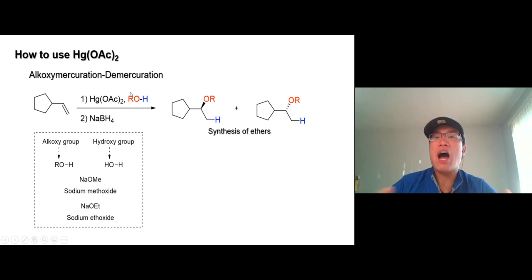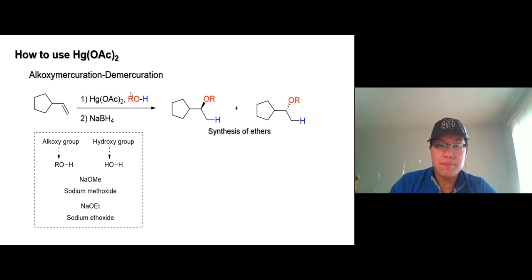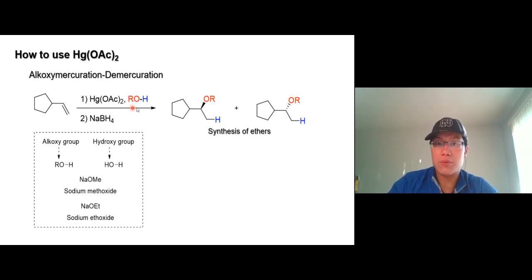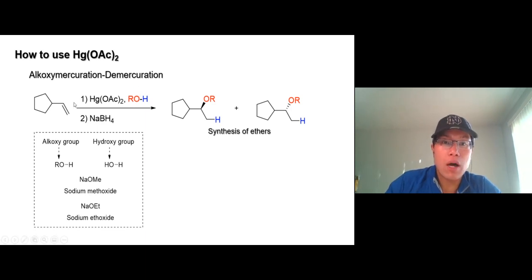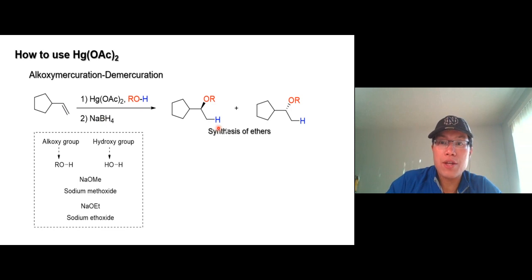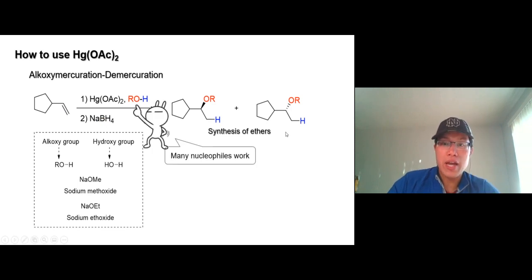We call it alkoxy mercuration-demercuration. You don't have to memorize the name, but when I say alkoxy mercuration or oxymercuration, you know alkoxy is an alkyl group on an oxygen. This is an alcohol, not just water. Same mechanism: the OR group goes there, mercury goes here, then remove mercury with sodium borohydride and you get that product.